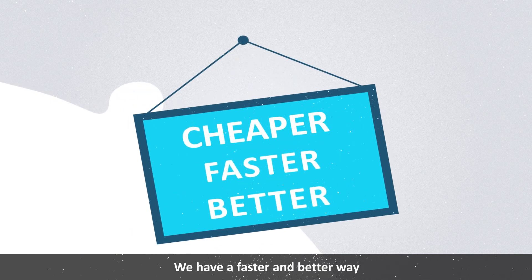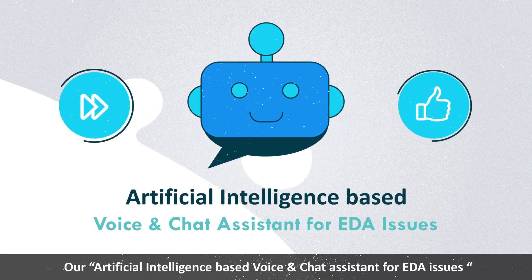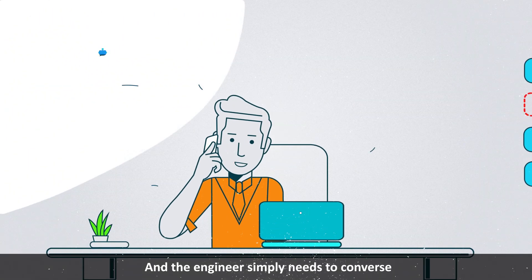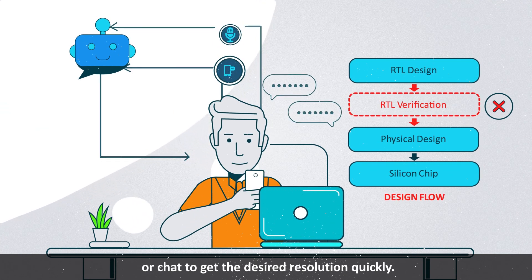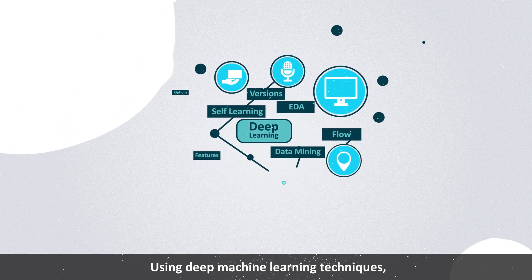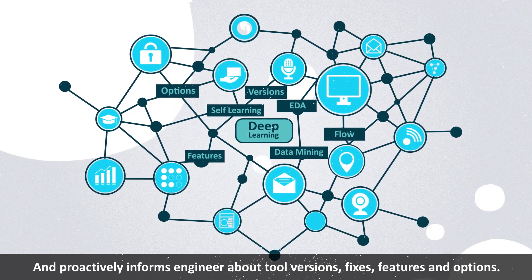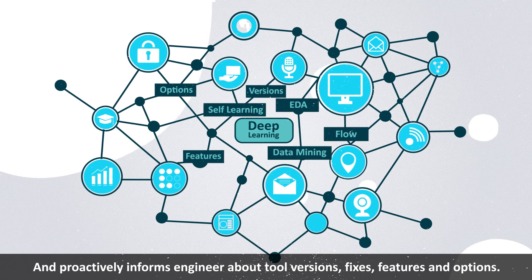We have a faster and better way. Our artificial intelligence based voice and chat assistant for EDA issues provides instant resolution in real time, and the engineer simply needs to converse or chat to get the desired resolution quickly. Using deep machine learning techniques, our technology self-learns and proactively informs engineers about tool versions, fixes, features, and options.